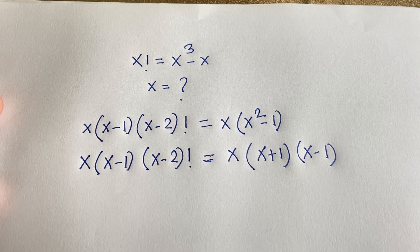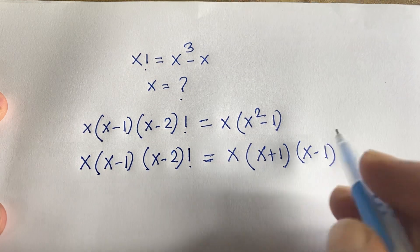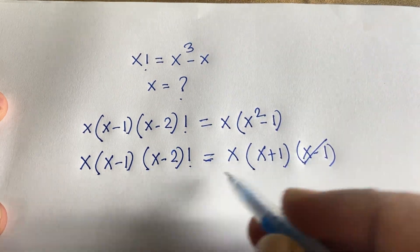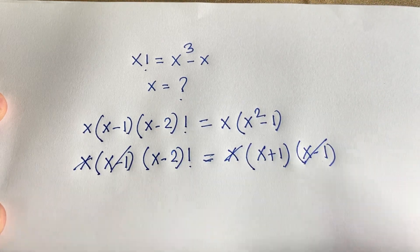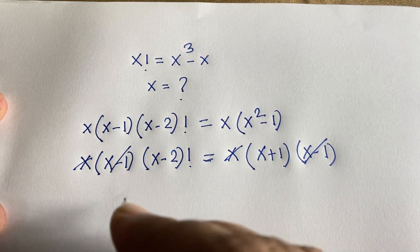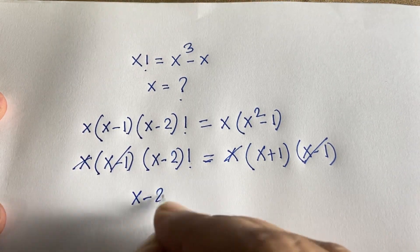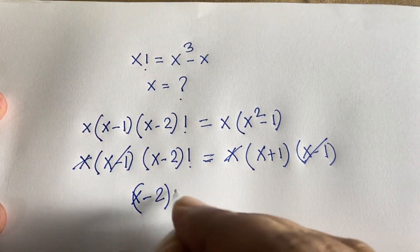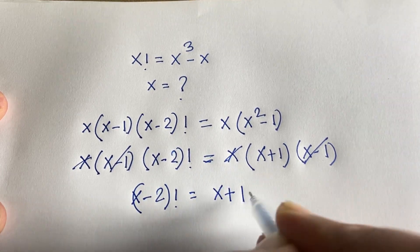Now at this moment, if I divide both sides by x times x plus 1 times x minus 1, these terms cancel and these terms cancel. And we find out that x minus 2 factorial is equal to x plus 1.